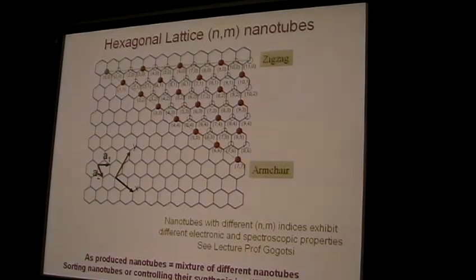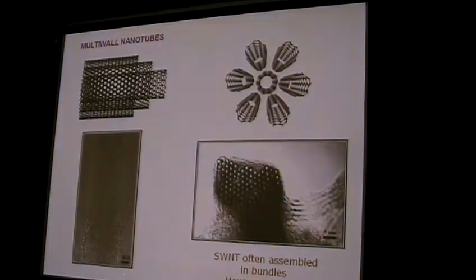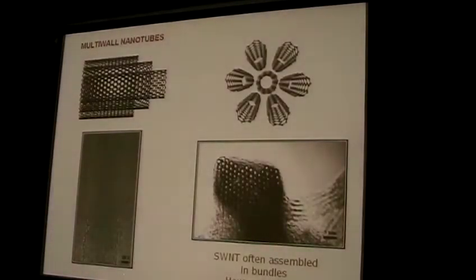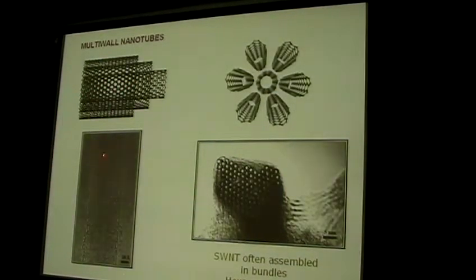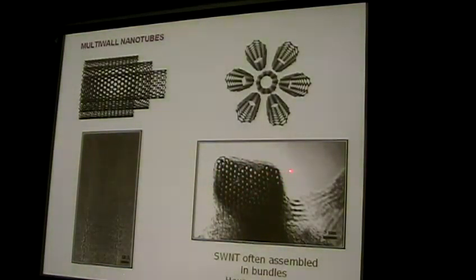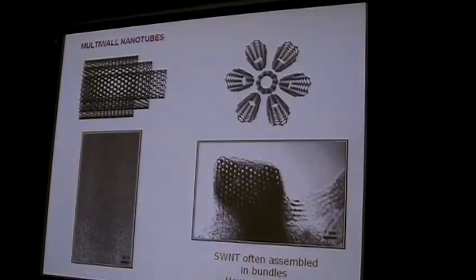I won't talk about these properties today, because for the mechanical or electrical properties I will discuss, we won't pay attention to the exact nature of the carbon nanotubes. I've shown you single-wall carbon nanotubes, but there are also multi-wall carbon nanotubes with coaxial tubes. Very often, single-wall carbon nanotubes are assembled in the form of bundles, which can be a problem for mechanical properties. This is not the case for multi-wall nanotubes.